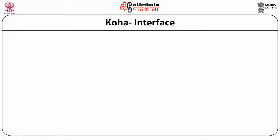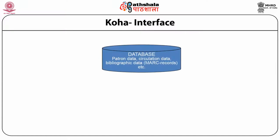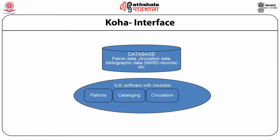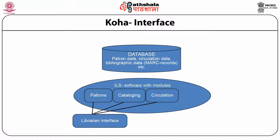The screen shows the interface of the Koha system in which databases with patron data, circulation data, and bibliographic data interact bidirectionally with all Koha software modules. The library interface interacts with patrons, cataloging, and circulation. The patron interface interacts with the OPAC module.